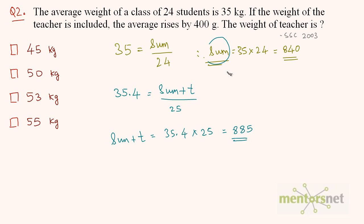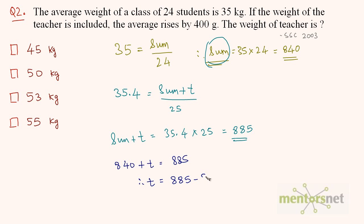We know the value of sum is 840. So we can write 840 plus t equals 885. Therefore, t equals 885 minus 840, which is equal to 45 kgs. So the weight of this teacher is 45 kg.